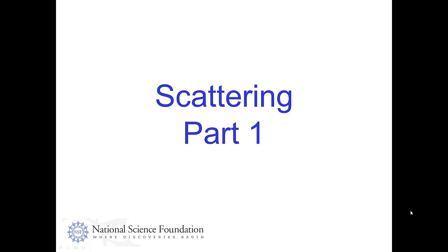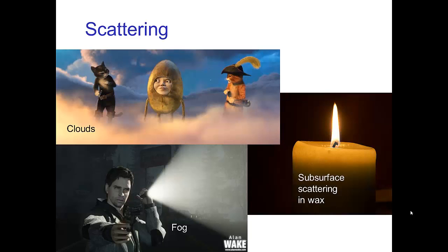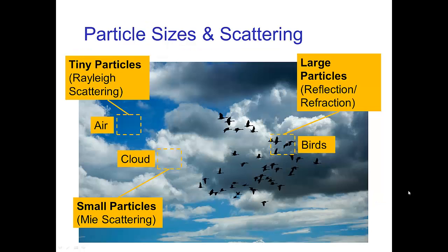Scattering Part 1. There are many important visual effects which involve scattering of light. Here are some examples: things like clouds, fog, and materials that have their characteristic look due to subsurface scattering. To understand the different types of scattering, it's important to realize that we have different effects due to the size of the particles that are doing the scattering. We'll focus mainly on two types of scattering.